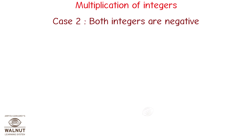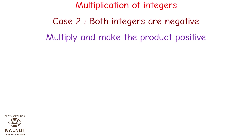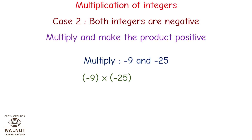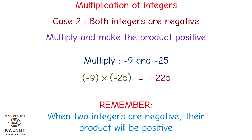Case 2: both integers are negative. Multiply and make the product positive. Multiply minus 9 and minus 25. Minus 9 multiplied by minus 25 is equal to plus 225. We multiply the numbers directly and get the answer. Since both numbers are negative, the product becomes positive. Remember, when two integers are negative, their product will be positive.